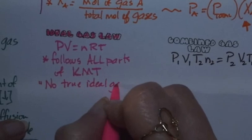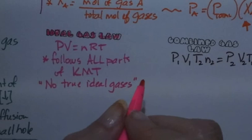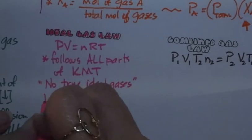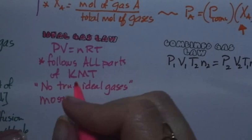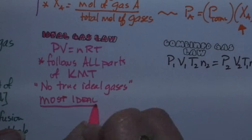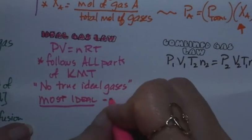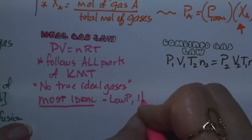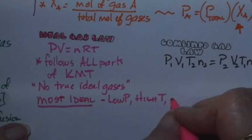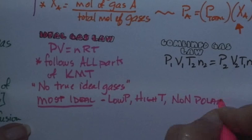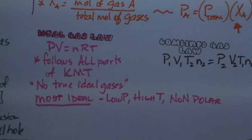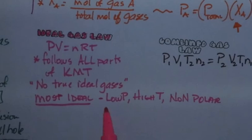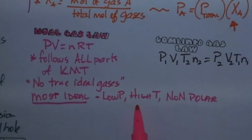So we look for gases that are most ideal and least ideal. The most ideal gases are at low pressure, high temperature, and are nonpolar. That means they are most gas-like — not close to turning back into a liquid. At low pressure, molecules are spread out; at high temperatures, they're moving fast and spread out; and if they're nonpolar, there are no attractions between them.